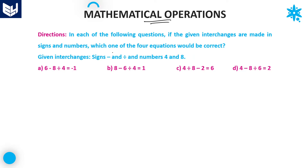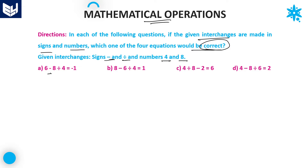In each of the following questions, if the given interchanges are made in signs and numbers, we have to change signs as well as numbers to identify the correct equation among the four given options. For the first question, we need to interchange minus and divided-by signs, and also interchange the numbers four and eight.